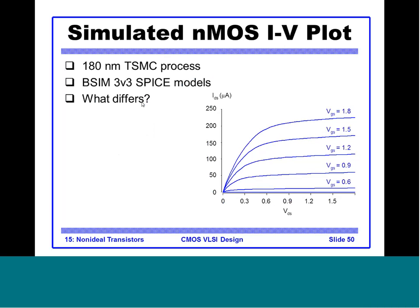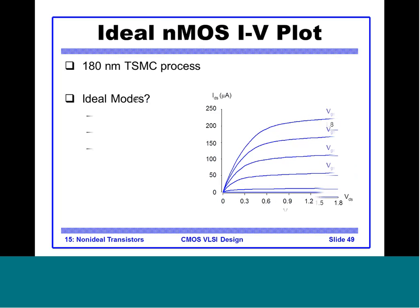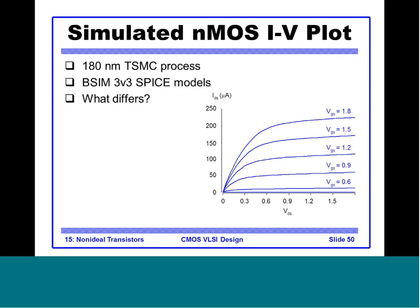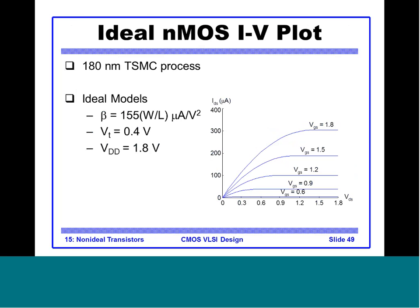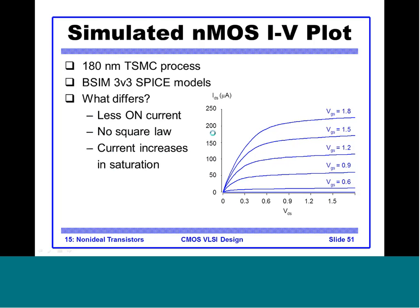SPICE models are the gold standard for analyzing MOS circuits — both digital and analog — and represent actual transistor behavior on silicon. Comparing the SPICE curve to the ideal curve, we see less on-current: for VGS = 1.8 V the SPICE IDS is between 200–250 μA, whereas the ideal model gives 300–400 μA. We also see no square law — in saturation the current is not constant as predicted by the ideal model, but still increases.